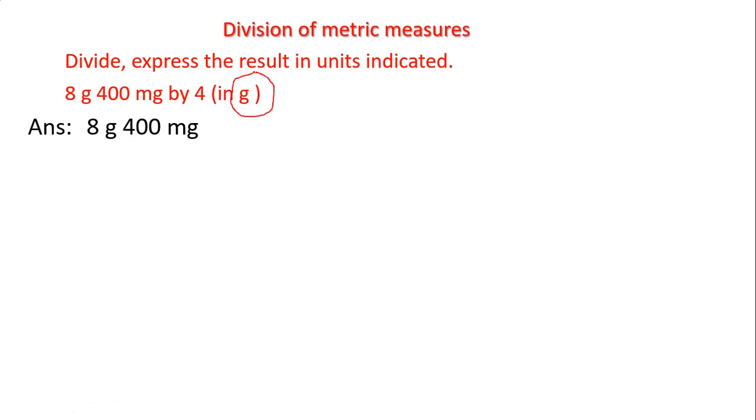We know that the first unit, 8 grams, is already in grams so we should not convert it. We have to convert only the 400 milligrams. Because of that, first I will write 8 same as it is.